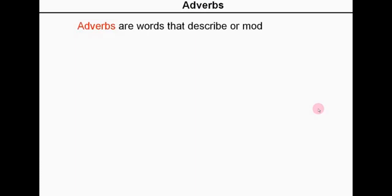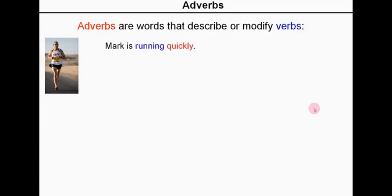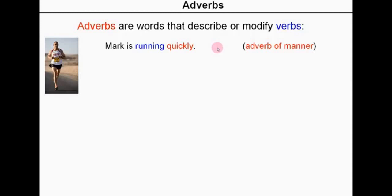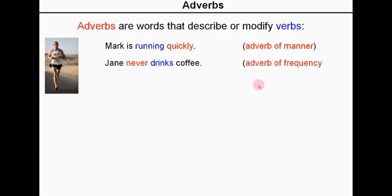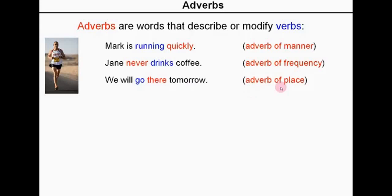Adverbs are words that describe or modify verbs. Mark is running quickly. Here is the verb 'running' — that is the action — and 'quickly' is describing the action, giving us more information. This is an example of an adverb of manner. Jane never drinks coffee — this is an adverb describing the verb 'drink', and it is an adverb of frequency. We will go there tomorrow — 'there' is an adverb of place, describing where we will go.